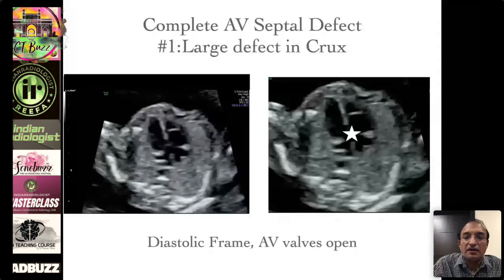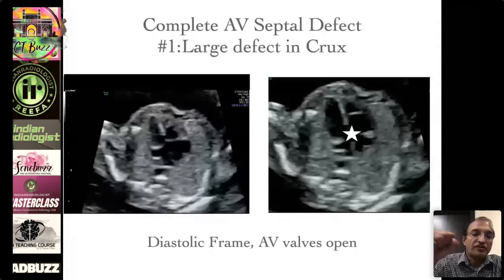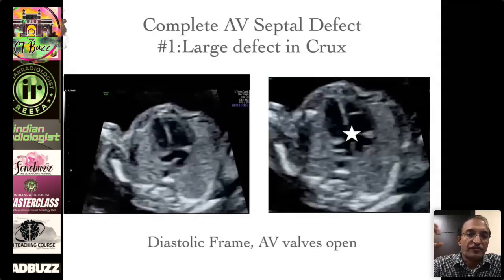It is as if there is a hole — the entire central portion of the heart where the atrial and ventricular septum meet is punched out.